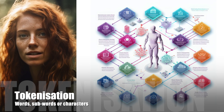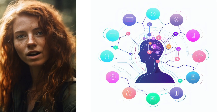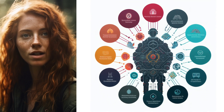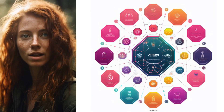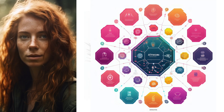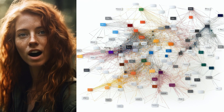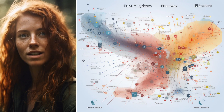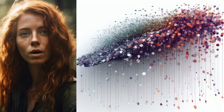Tokenization: LLMs process text by breaking it into smaller units called tokens, which can be words, subwords, or characters. Tokenization enables the model to handle different languages and adapt to new words or phrases. Embeddings: Tokens are converted into numerical representations called embeddings, which are high-dimensional vectors. Embeddings enable the model to process text and identify patterns and relationships within the data.